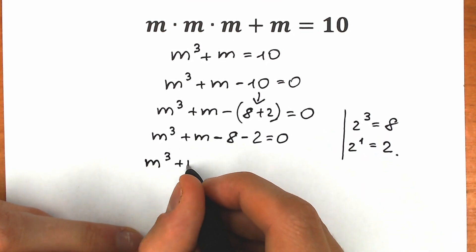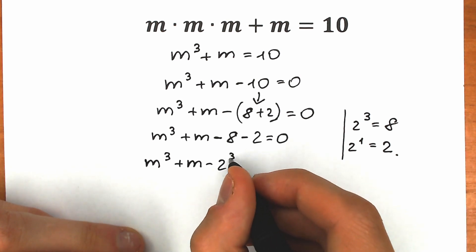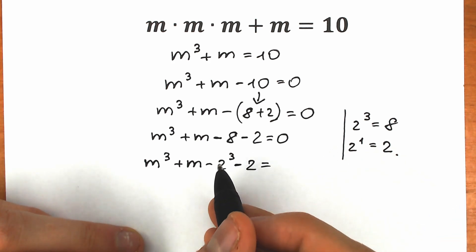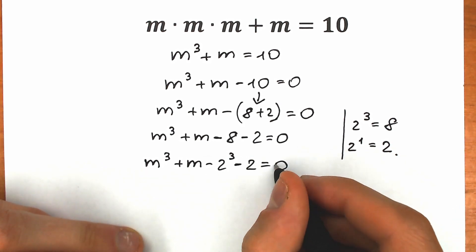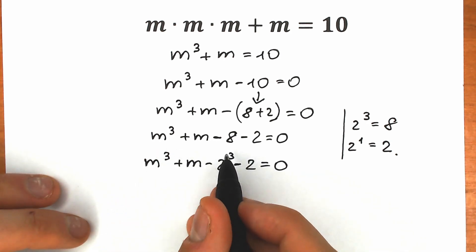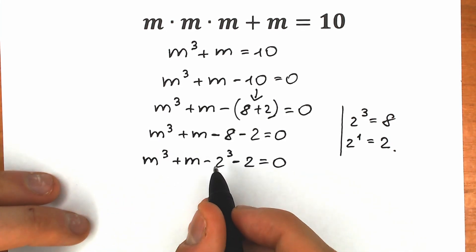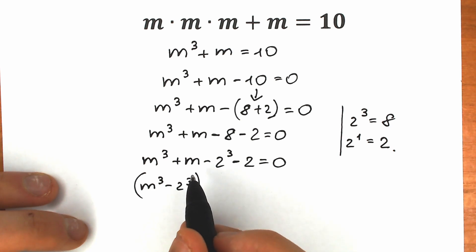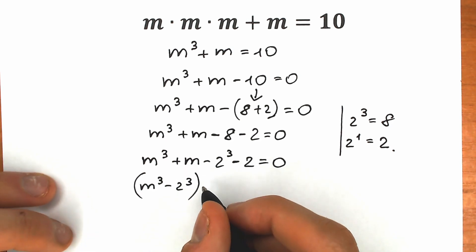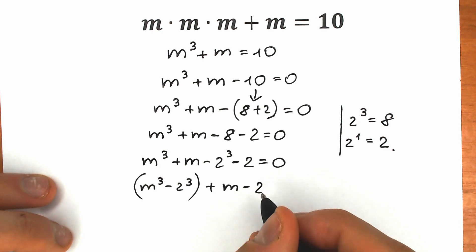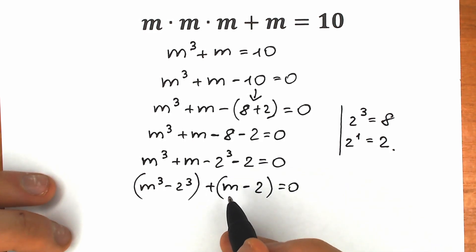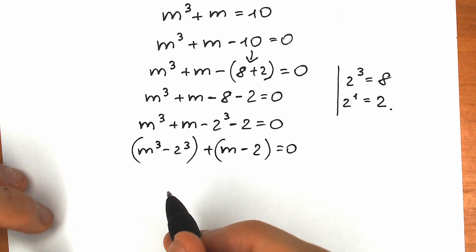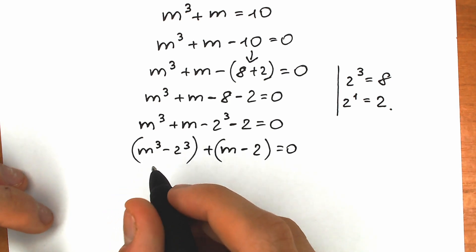So we have m cubed plus m minus 2 cubed minus 2 to the first power. It's a great expression because in the beginning we had the cube and the first power, so we can group them. Now let's group the third powers and the first powers. We get m cubed minus 2 cubed, plus m minus 2. We have a linear expression and also a difference of two cubes.